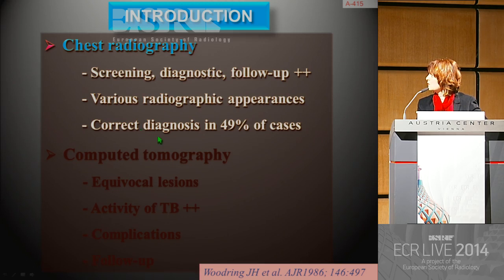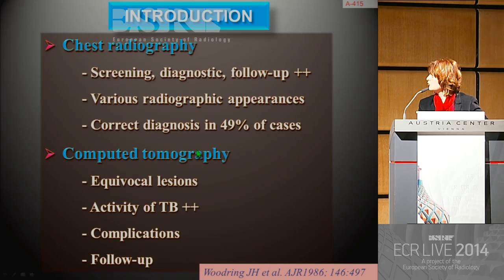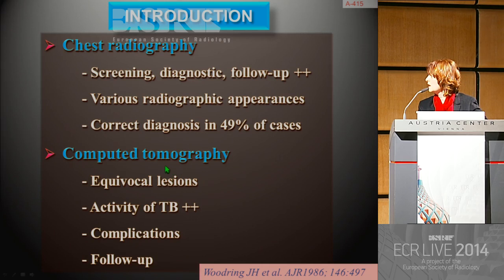The correct diagnosis of pulmonary TB is achieved in only about 50.5% of cases. Computed tomography is usually required to detect fine lesions overlooked on chest X-ray, to define equivocal lesions, and to explain and detect complications.